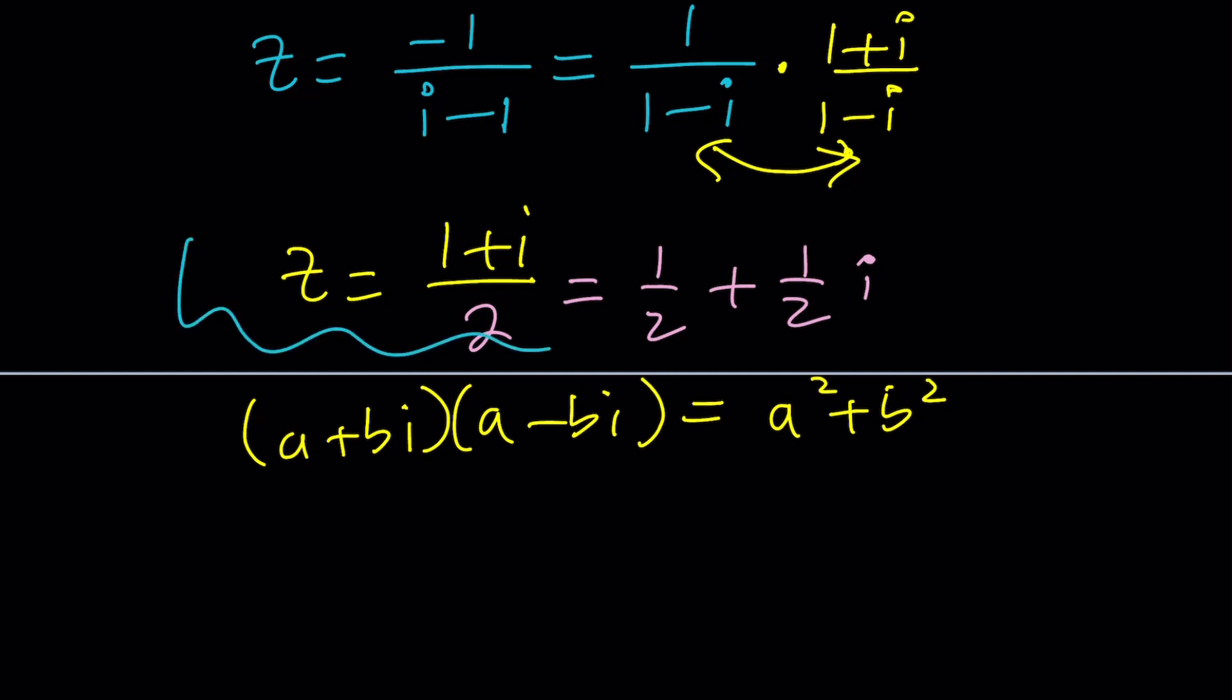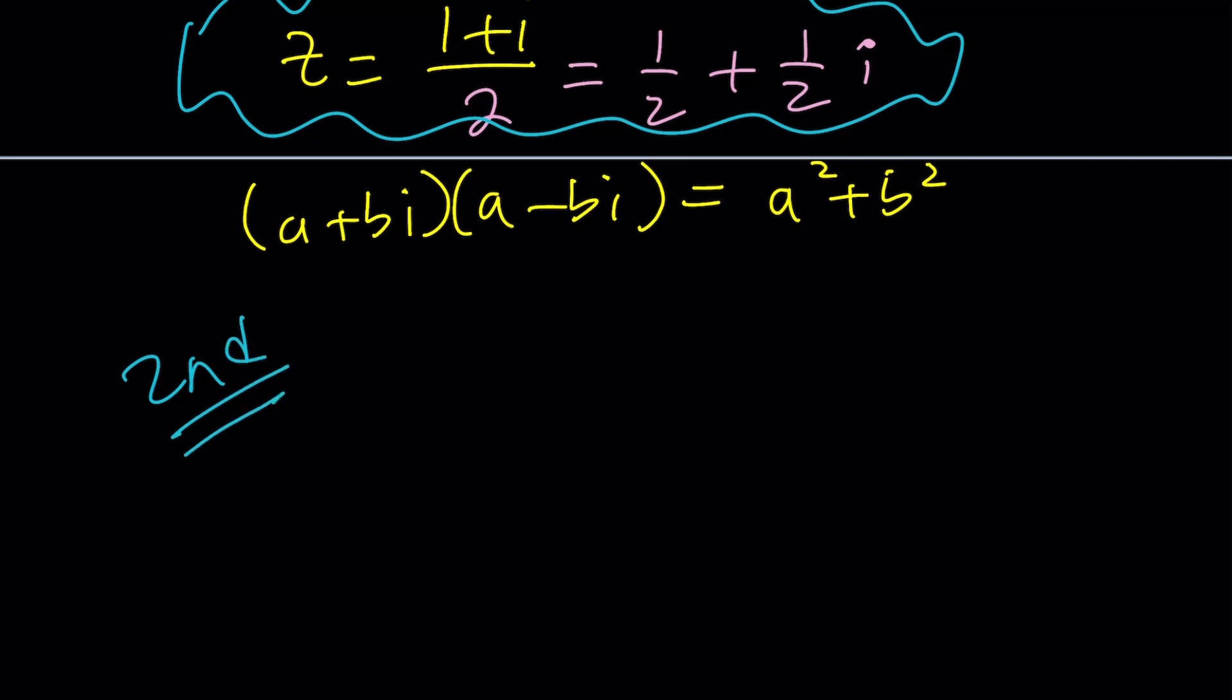And this brings us, not to the end of this video, to the end of the first method. Let's go ahead and do the second method, and then we'll be done. Alright, second method is kind of cross-multiplying. So we have Z minus I is Z over I. Why not cross-multiply? ZI minus I squared equals Z.